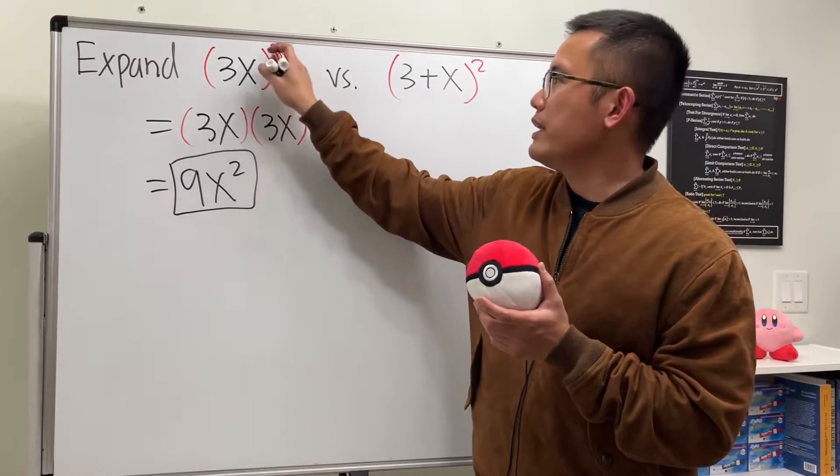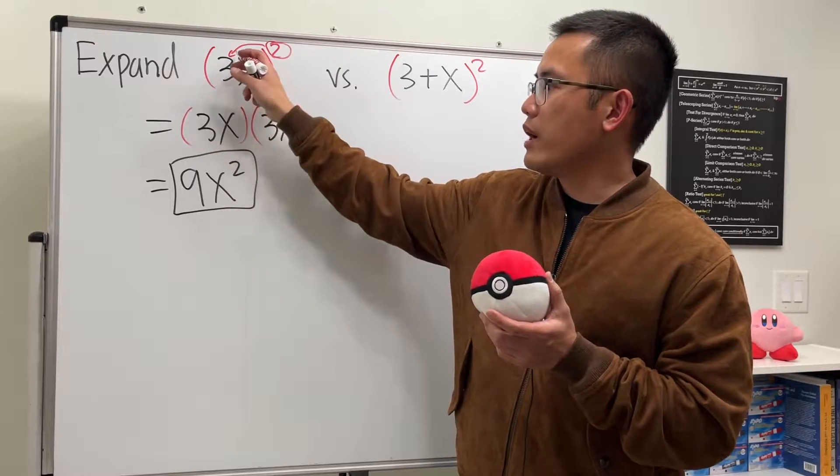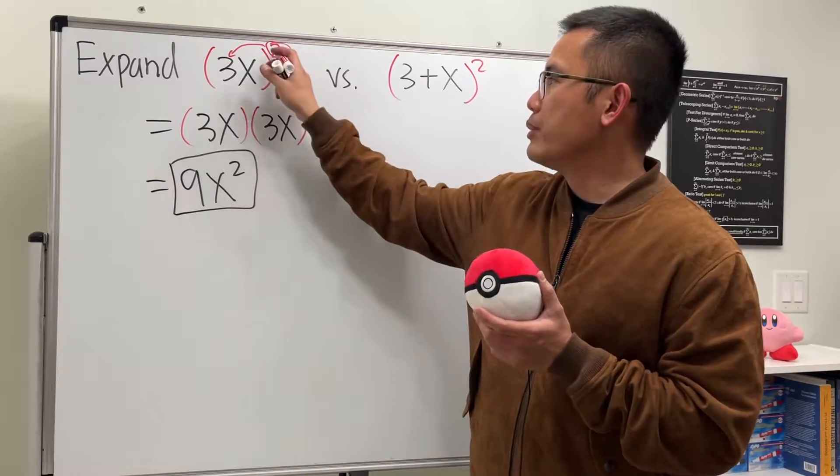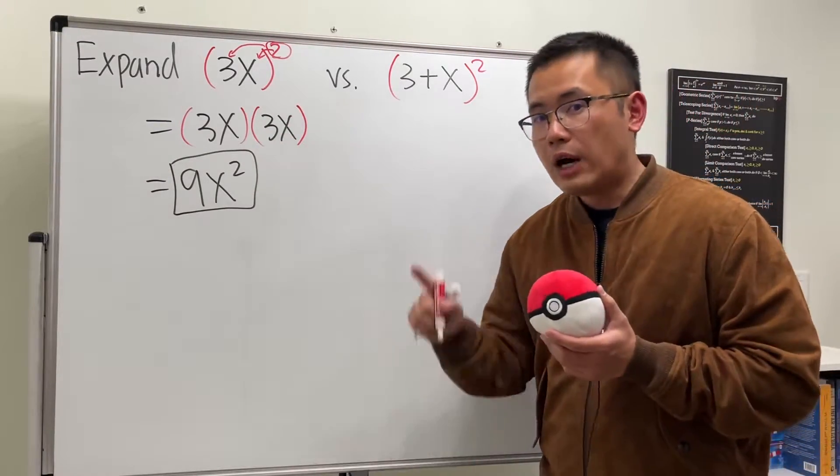In this case when we have (3x)², we can actually just put the 2 to the 3 and we see the 3 squared is just the 9, and then put the 2 to the x and we have x squared, and that's it.